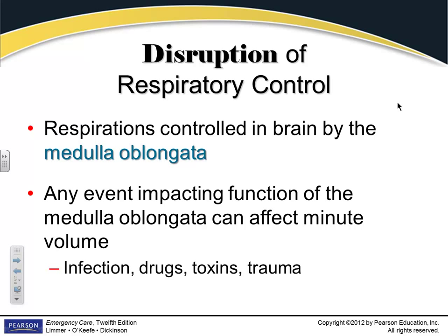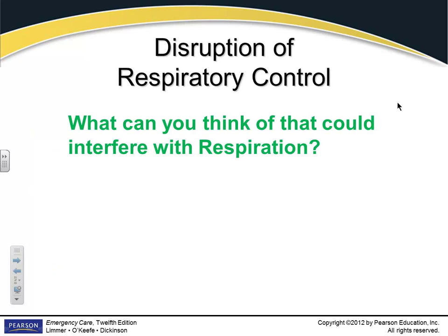Things that can cause disruption to the medulla include trauma, toxins, infection, and certain drugs — all of which can have a negative impact on the medulla and the respiratory control it provides.